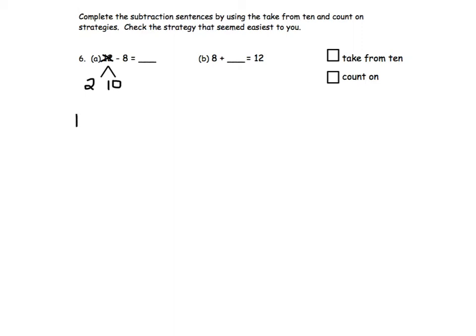Start with the 10 and subtract the 8, and 10 minus 8 equals 2. We then take that 2 and add it to the remaining part, 2, and we get 2 plus 2 equals 4.